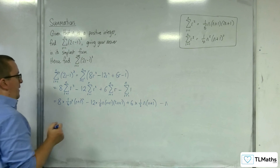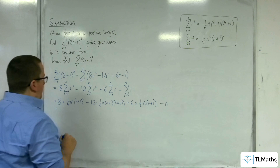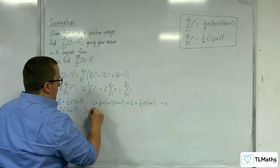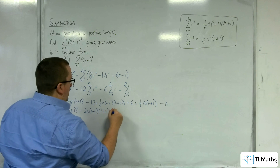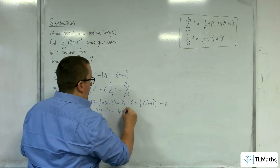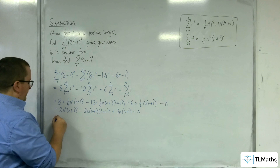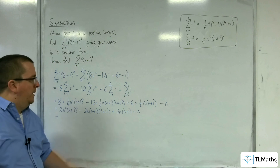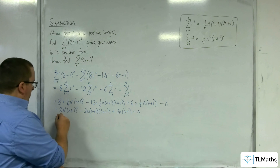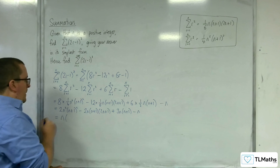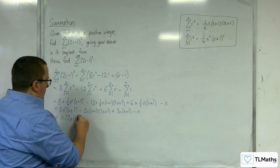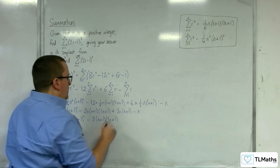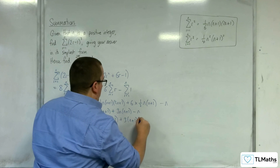Now we simplify the coefficients. We get 2n²(n+1)², take away 2n(n+1)(2n+1), plus 3n(n+1), take away n. They all have n in common, so we can factor that out: n times [2n(n+1)² minus 2(n+1)(2n+1) plus 3(n+1) minus 1].